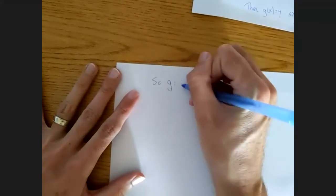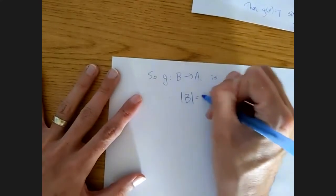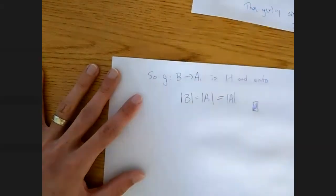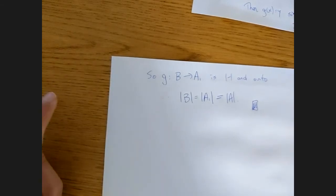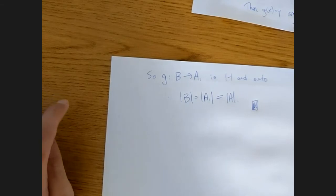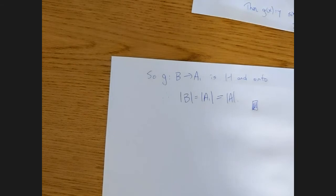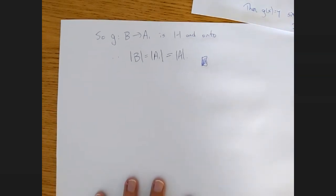So g from b to a1 is one-to-one and onto. That proves that the cardinality of b is the cardinality of a1, which is as required. So that's the end of the Cantor-Schroeder-Bernstein theorem. To me it's pretty tough, but I hope it didn't go so badly for you.